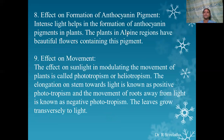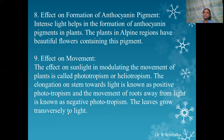Effect on formation of anthocyanin pigment: intense light helps in the formation of anthocyanin pigments in plants. That is why in alpine regions you can see beautiful flowers containing various anthocyanin pigments. Effect on movement: the effect of sunlight in modulating the movement of plants is called phototropism or heliotropism. Elongation of the stem toward light is known as positive phototropism, and the movement of roots away from light toward soil or gravity is known as negative phototropism. The leaves grow transversely to light.